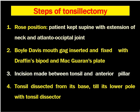After positioning, the Boyle-Davis mouth gag is inserted and fixed to the Draffin's bipod and Mcewan's plate. The Boyle-Davis mouth gag helps to open the mouth adequately. A complication of using it is temporomandibular joint dislocation, which the surgeon has to check at the end of surgery. When there is an adequate surgical field, incisions are made between the tonsil and the anterior tonsillar pillar — this is called the anterior pillar J-shaped submucosal incision, made in a J-shape on the right side and an inverted J on the left.